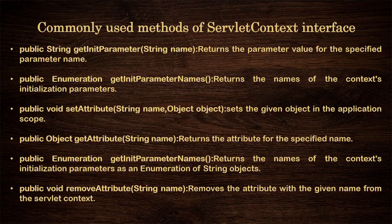Public Enumeration getInitParameterNames() — returns the names of the context initialization parameters.